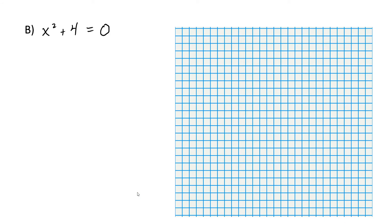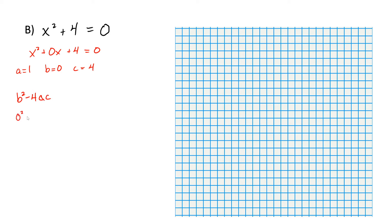Here's another example. We have x squared plus 4 is equal to 0, and we want to determine the nature of these solutions. We can rewrite this as x squared plus 0x plus 4 is equal to 0. So a is equal to 1, b is equal to 0, and c is equal to positive 4. Plugging into the discriminant, we get 0 squared minus 4 times 1 times 4, and we end up getting the discriminant is equal to negative 16. So this is negative, meaning there are no real solutions.